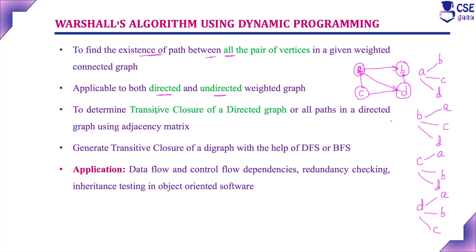Warshall's algorithm is used to determine the transitive closure of a directed graph, or all paths in a directed graph, using an adjacency matrix. This transitive closure is nothing but the path matrix — it finds the existence of path between every pair of vertices in the given graph. This transitive closure can also be found with the help of DFS (depth first search) or BFS (breadth first search) algorithm.